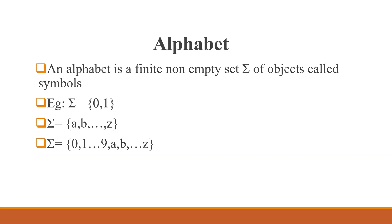Let's start with alphabet. An alphabet is a finite non-empty set sigma of objects called symbols. For example, the English alphabet is a to z, and from that alphabet we can form words and sentences.